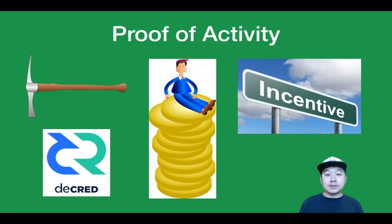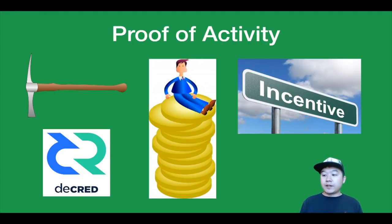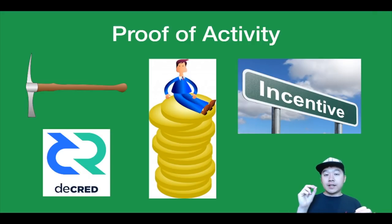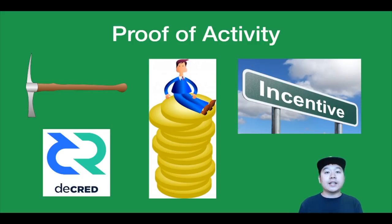So proof of activity aims to solve this by starting out with proof of work, allowing miners to mine an empty block template without any transactions. Then it switches to proof of stake where validators select a block to sign and rewards get split between the proof-of-work miner and a staker. The criticism is kind of the same for both — it still has energy usage, and there's no deterrence of double signing in terms of the nothing-at-stake problem. A notable project that implements proof of activity is Decred.